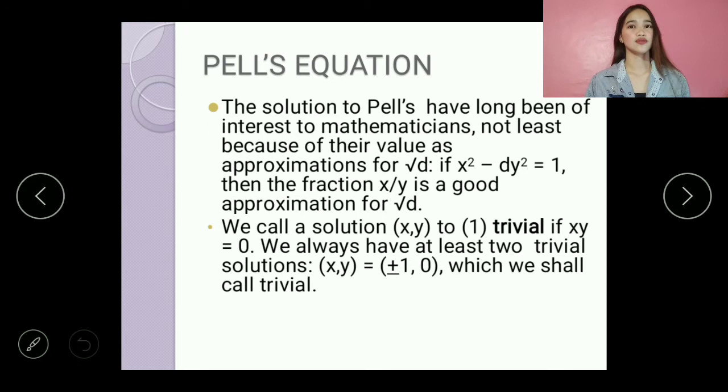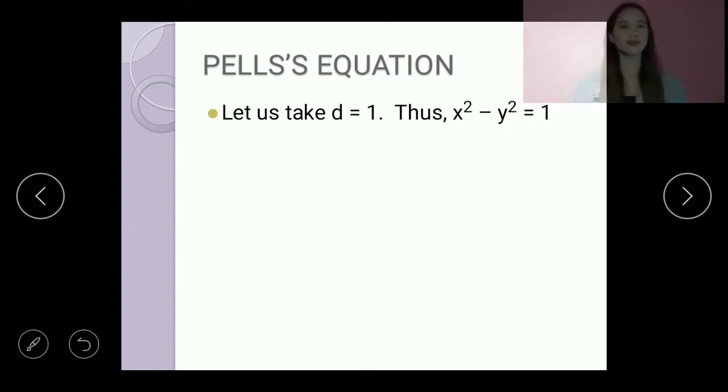We call a solution x and y to 1 trivial if x times y is equal to 0. And we always have at least 2 trivial solutions: x and y is equal to positive or negative 1, 0, which we shall call trivial.